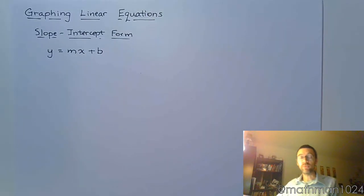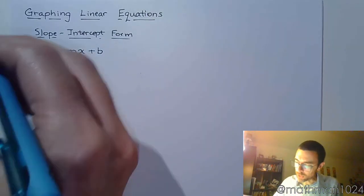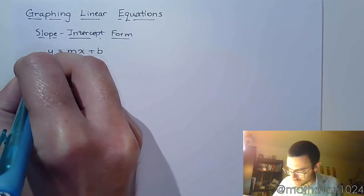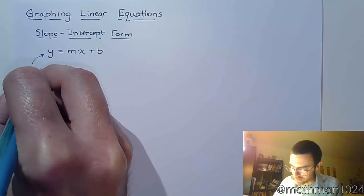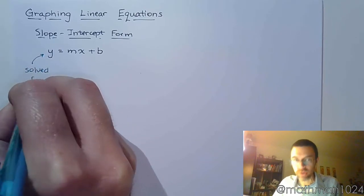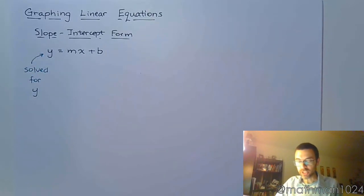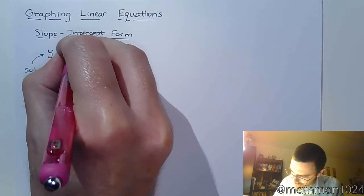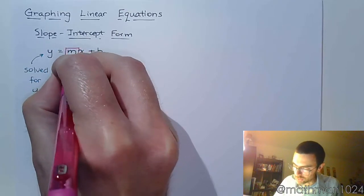So the slope-intercept form is y equals mx plus b. Here are some things you need to know about this form. First of all, this is an equation that is solved for y. This coefficient in front of the x is our slope.